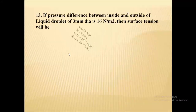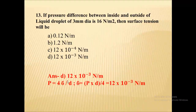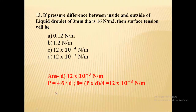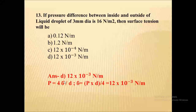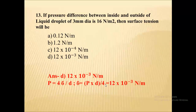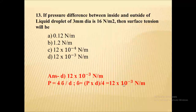If the pressure difference between inside and outside of a liquid droplet of 3 mm diameter is 16 newton per square meter, the surface tension will be 12 × 10⁻³ newton per meter. For a liquid droplet, pressure difference equals 4σ/d. Rearranging: σ = (pressure × diameter) / 4 = 16 × (3 × 10⁻³) / 4 = 12 × 10⁻³ newton per meter.